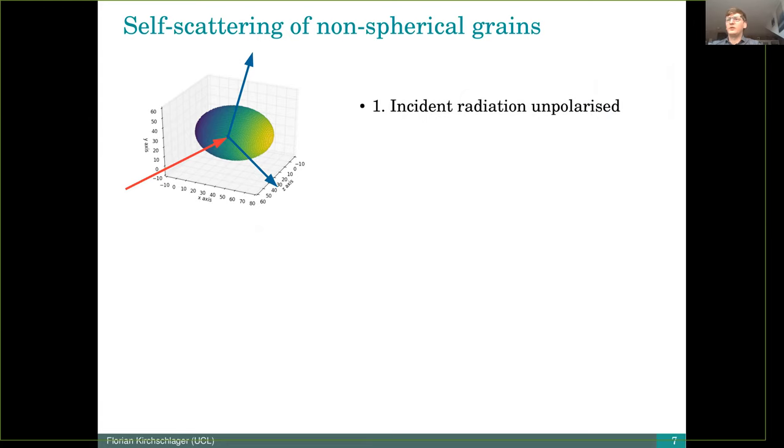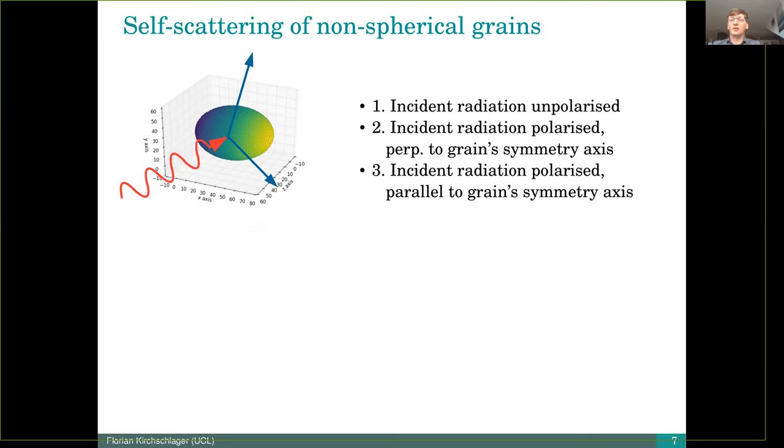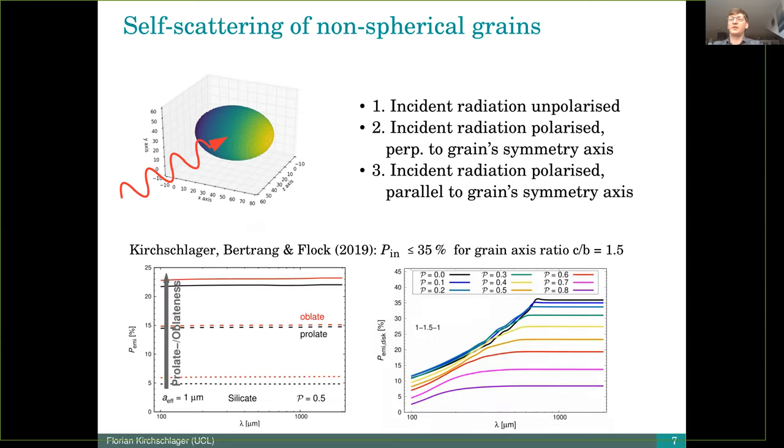We investigated three different scenarios. The first one is that the incident radiation is unpolarized, and scenario two and three use polarized infalling radiation perpendicular to the grain symmetry axis or parallel to the grain symmetry axis. We also vary the initial polarization fraction between zero and 35 percent. These 35 percent are the maximum intrinsic polarization of elongated dust grains, which we found in a previous study when the grain axis ratio is 1.5.